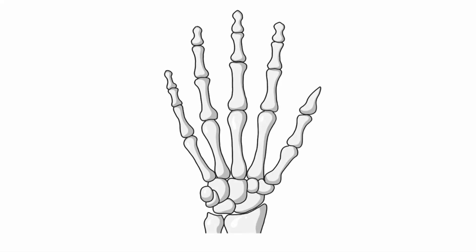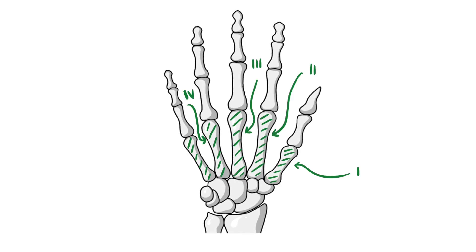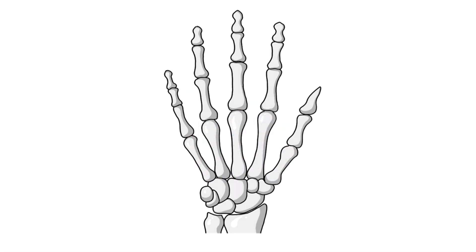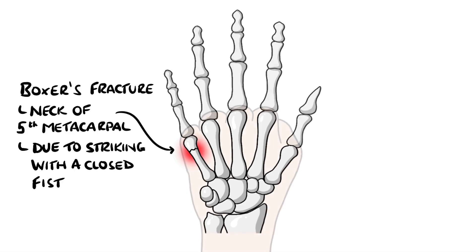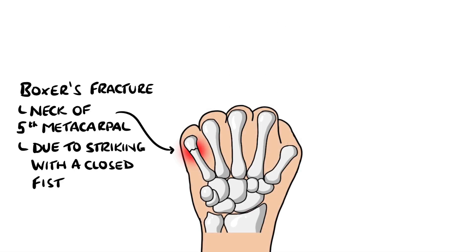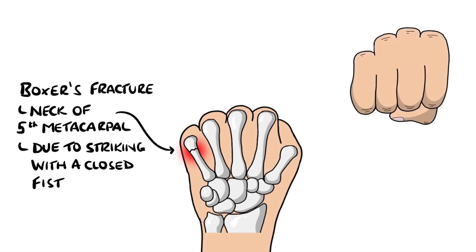Next up are the metacarpals, numbered 1 to 5 from the thumb — which is easy to remember because each hand only has one thumb. A famous fracture of the metacarpals is the boxer's fracture, which is on the 5th metacarpal after striking with a closed fist. This can lead to misalignment of the knuckle, as the metacarpal makes up the knuckle.